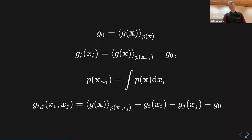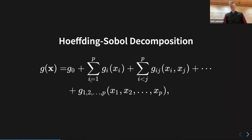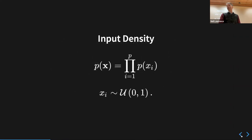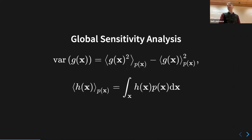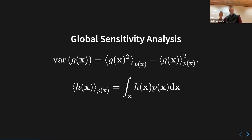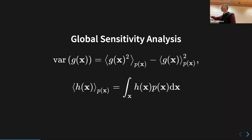In machine learning we often refer to these integrals as marginalization — when we integrate out variables they disappear from the function. I once wondered why we call it marginalization, and I decided it's because the variables disappear and the only way you'd remember them is if you wrote them in the margin.